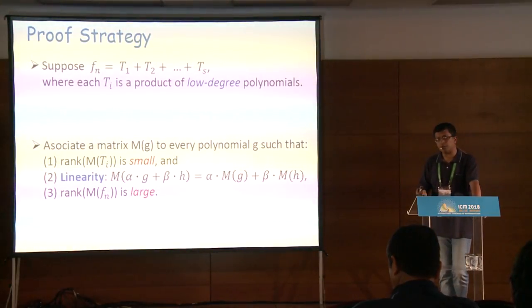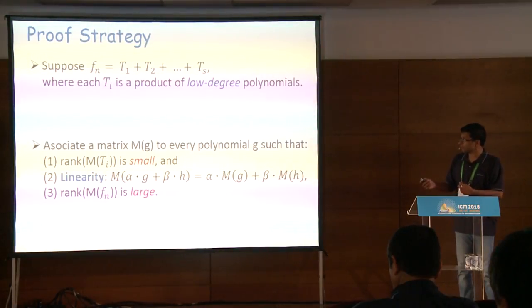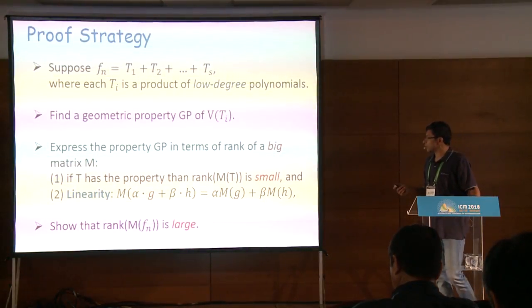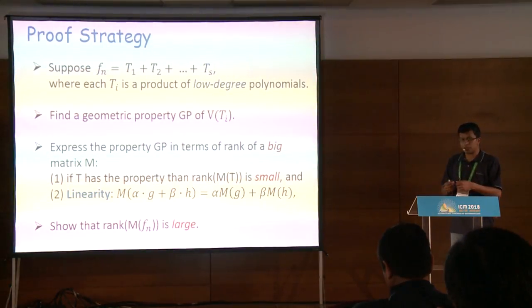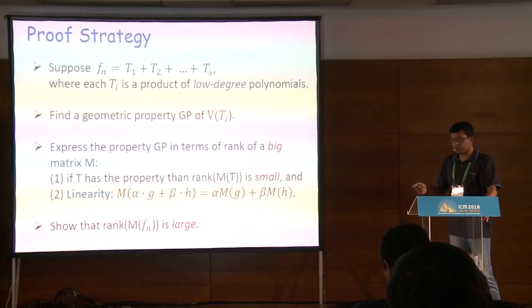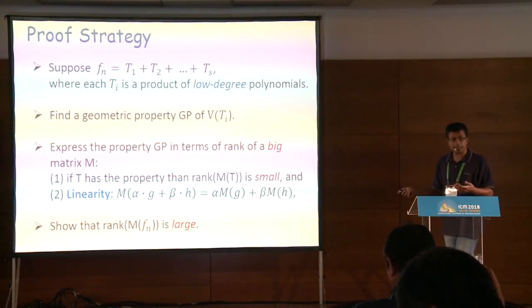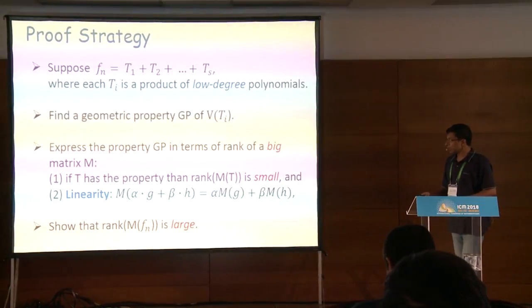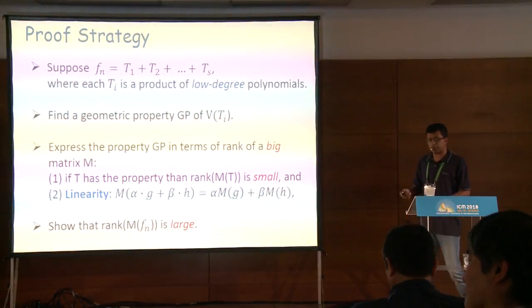Almost all the proofs we know follow this template. To find these matrices we look at geometric properties of certain varieties. Each term Ti is a polynomial and defines a variety — a set of points at which the polynomial vanishes. We examine properties of this variety and convert them into the rank of some matrix, then show that the rank of the matrix for the hard function is large.